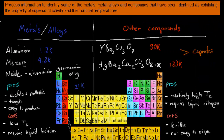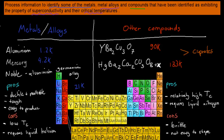The dot point says: process information to identify metals, metal alloys, and compounds that have been identified as exhibiting the property of superconductivity and their critical temperatures. So you need to know examples of metals, metal alloys, or compounds that exhibit superconductivity, and their critical temperatures. Remember, the critical temperature is the point below which a material completely loses all resistance.